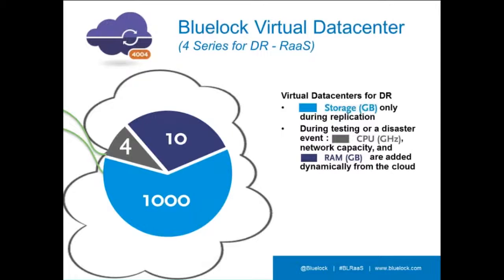The software automatically assigns all the CPU, RAM, and network capacity you need, which is critical but also super efficient since you're not paying for it otherwise. We actually do two tests per year that we don't charge for, as long as you schedule them with advance notice. Only when you would declare a disaster do those resources actually impact you.